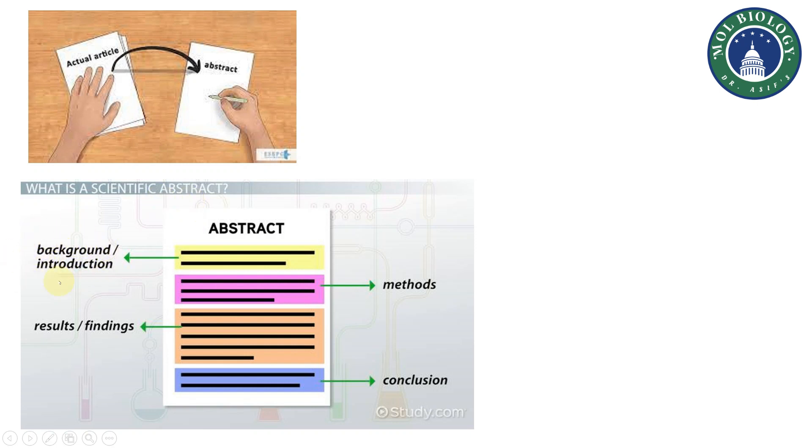You provide that background or introduction in just one or two lines. In the next two lines, you describe the methods, then your results and findings from your experiment, and in the last few lines you add the conclusion. These are the main parts of an abstract.